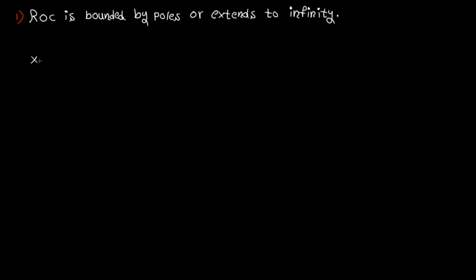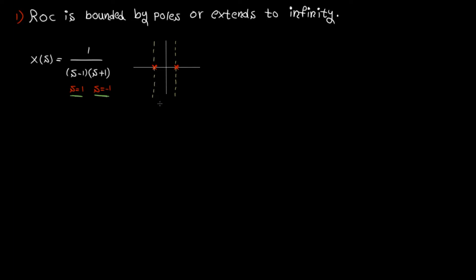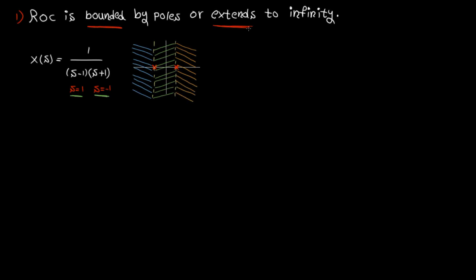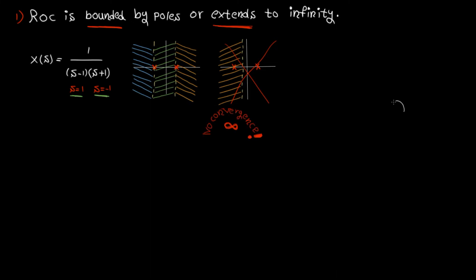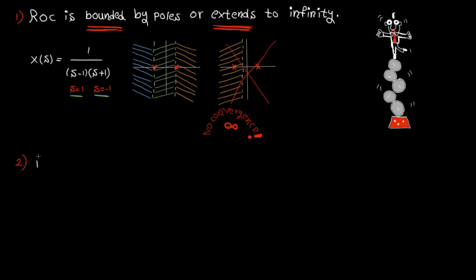Rule number one: ROC is always bounded by poles or extends to infinity. Consider an example with two poles, one at one and another at minus one. Plot them on the Cartesian coordinate system and draw a vertical line on each pole. ROC can be bounded by poles on both sides, or bounded by a pole on one side and extend to infinity on the other. Note that a region including a pole is not valid, because at a pole the Laplace transform goes to infinity — meaning no convergence.